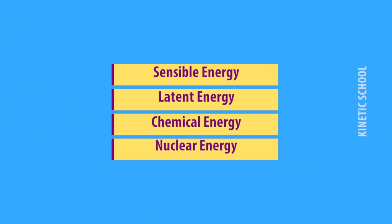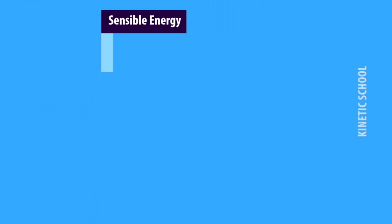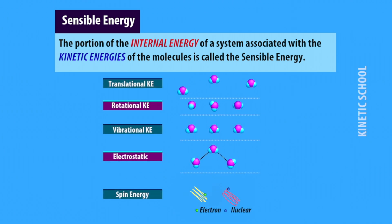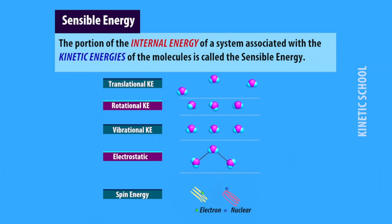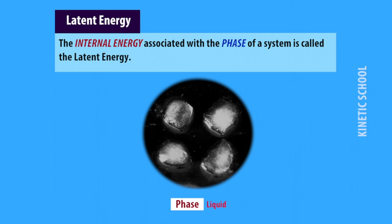Some microscopic internal energy forms are: sensible energy, latent energy, chemical energy, and nuclear energy. First, sensible energy — the portion of the internal energy of a system associated with the kinetic energies of the molecules is called sensible energy, such as translational kinetic energy, rotational kinetic energy, vibrational kinetic energy, and electrostatic and spin energy.